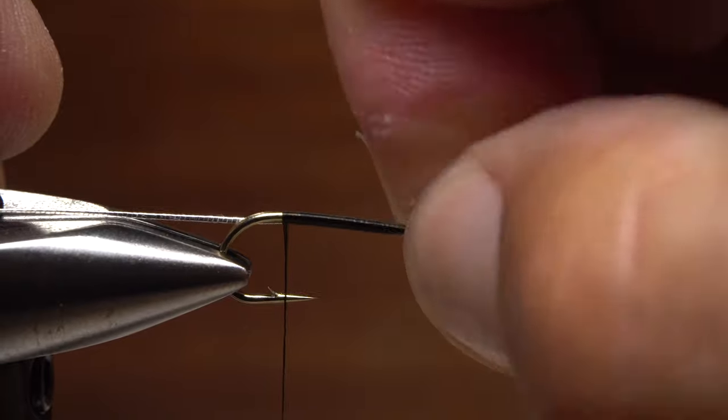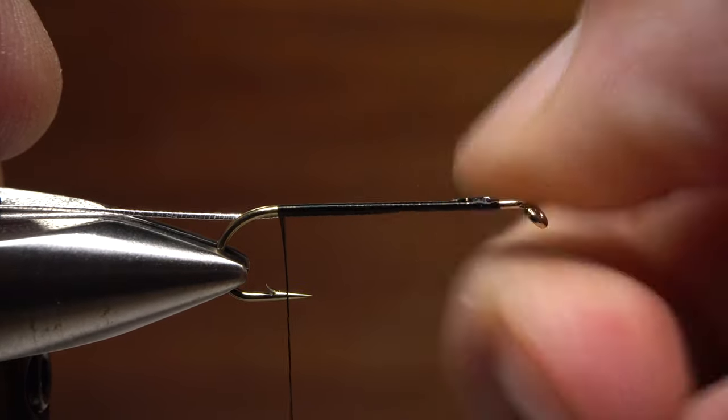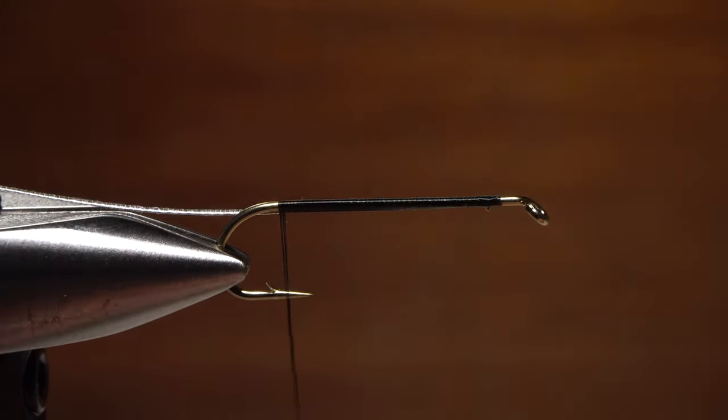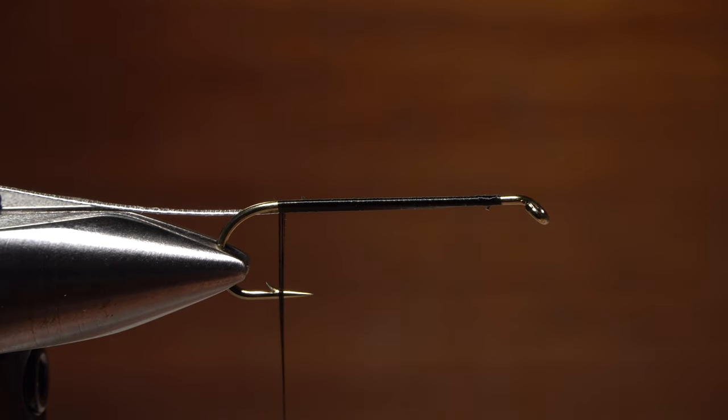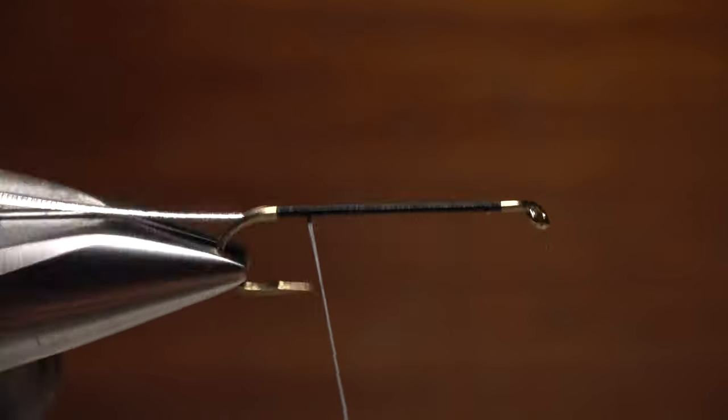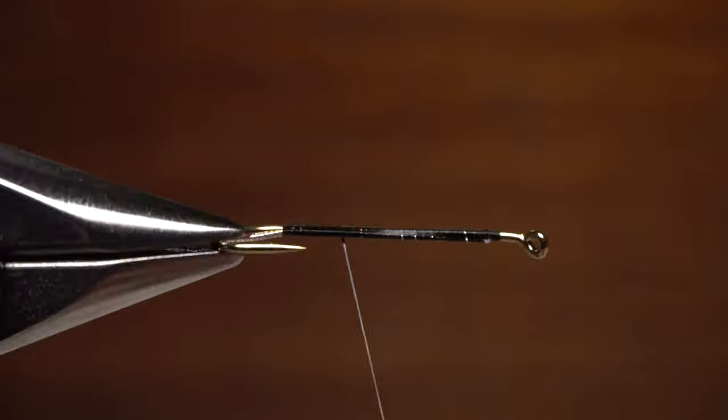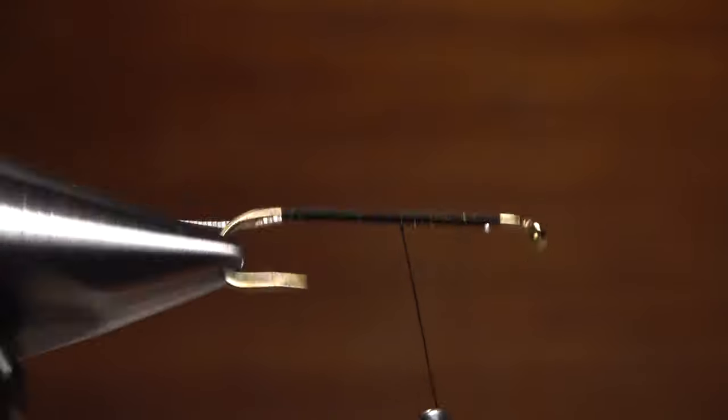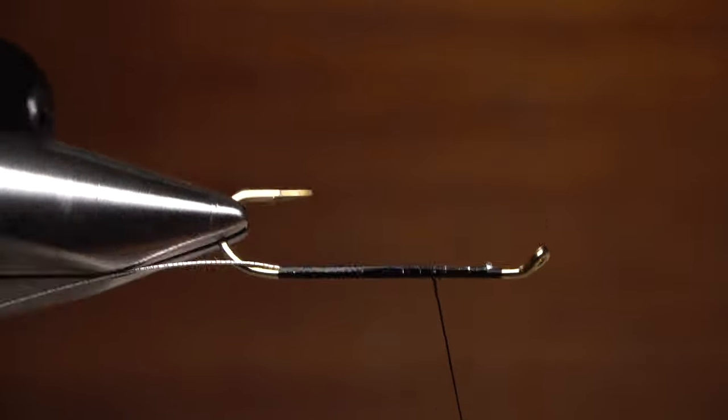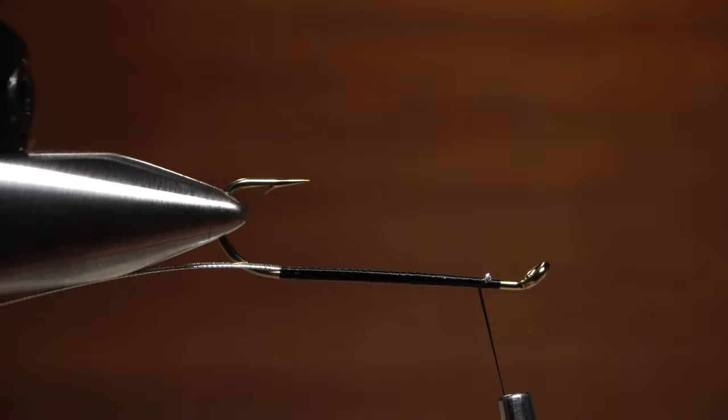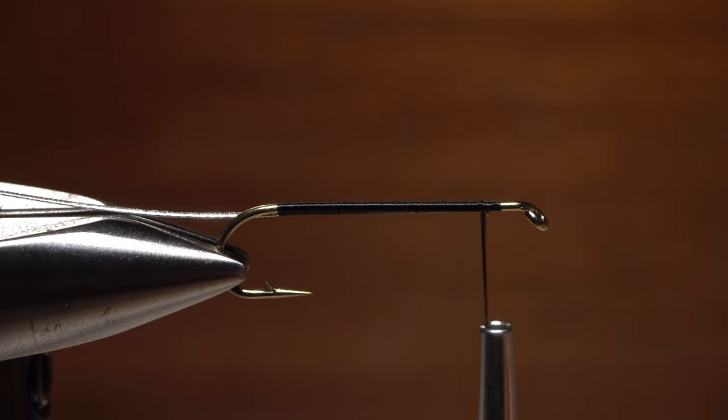Then, do your best to push the tinsel that started on top of the hook shank all the way around to the underside of the shank. You can then use your vise's rotary function to make touching wraps back up the hook shank. The idea is to produce the smoothest underbody possible. End with your tying thread at the initial tie-in point.